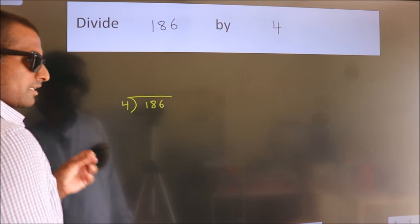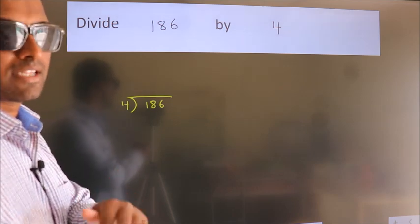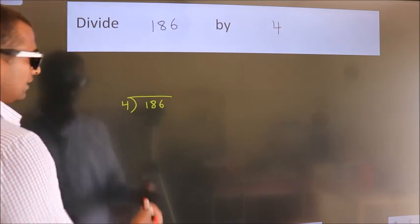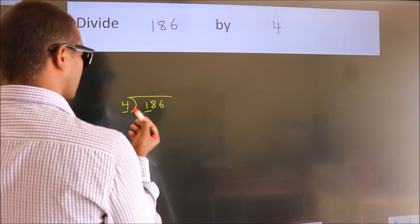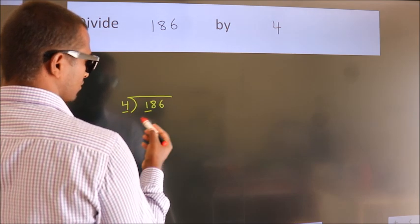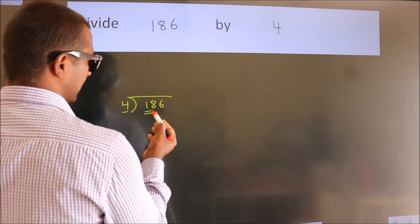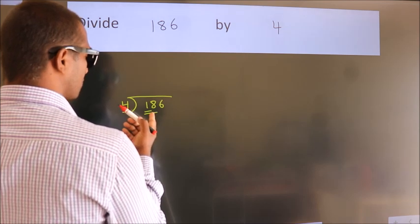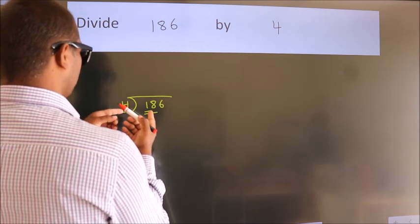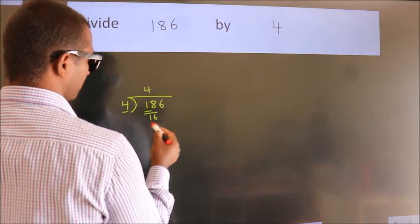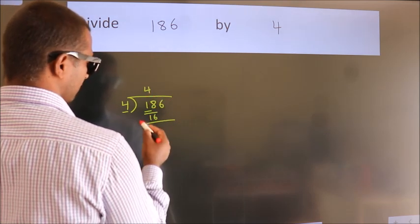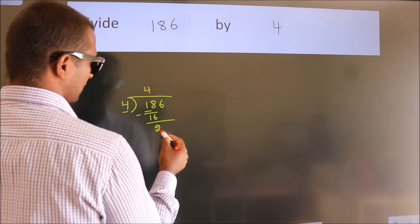This is your step 1. Next, here we have 1, here 4. 1 smaller than 4, so we should take 2 numbers, 18. A number close to 18 in 4 table is 4 fours, 16. Now we should subtract. We get 2.